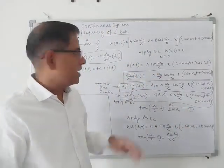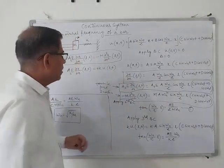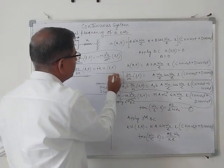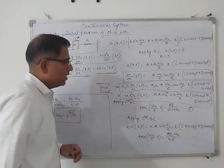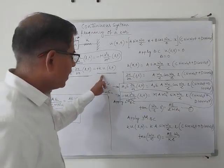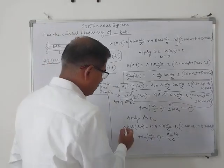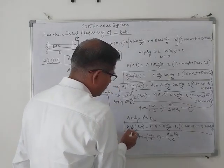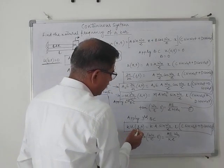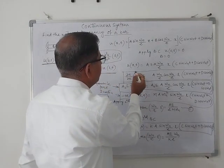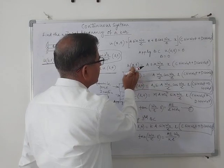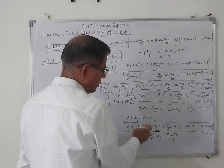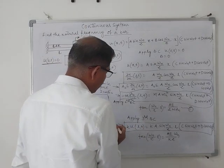After applying the second boundary condition, we move to the third boundary condition: tensile force is equal to the stiffness force. We find the expression for the stiffness force, which is the spring stiffness K multiplied by u at x equal to L. This gives us the spring force expression.